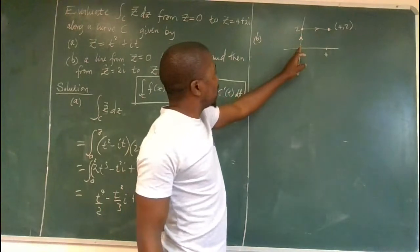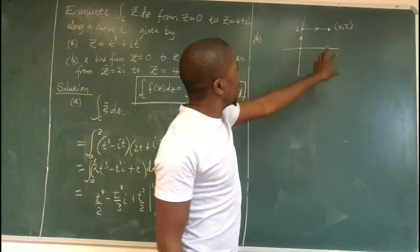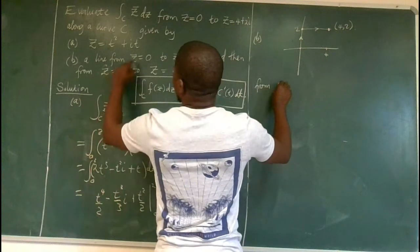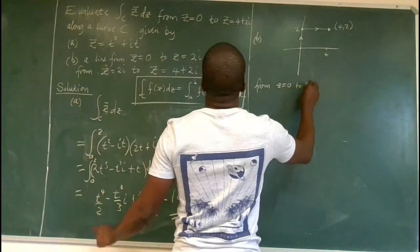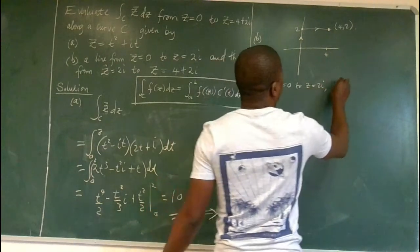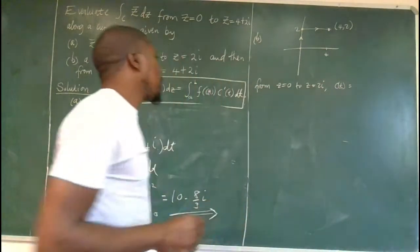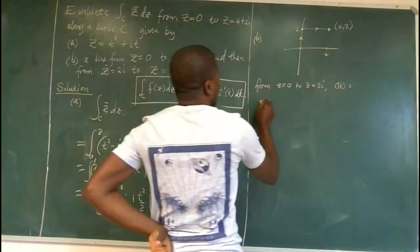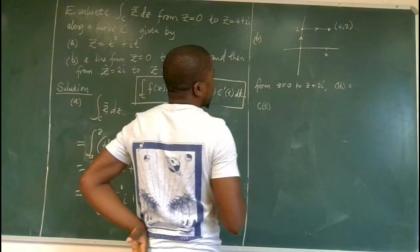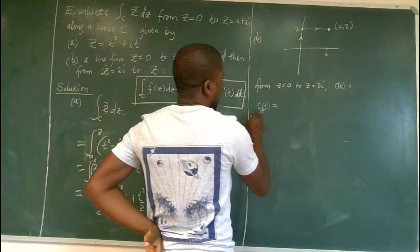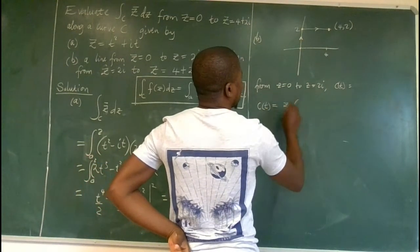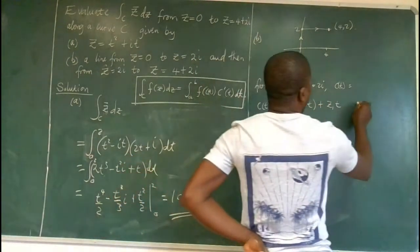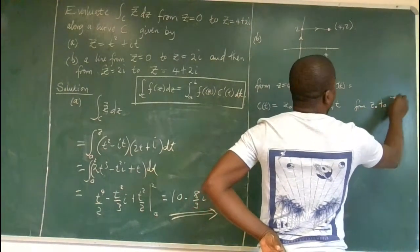So now, it means we need to get the parameterized function c(t) for this piece. And then the other c(t) for that other piece. So we are saying from z equals 0 to z equals 2i, our c(t) is equal to. Now, it's easy to determine the parameterized function. There is an easier way to do that. If you are moving along a straight line,